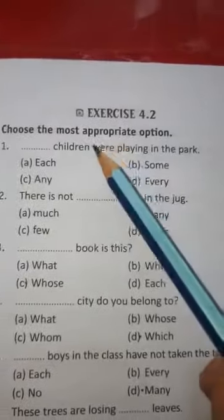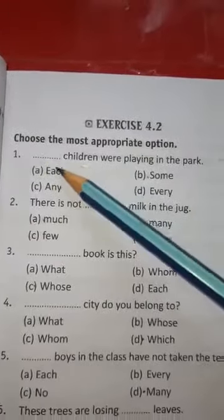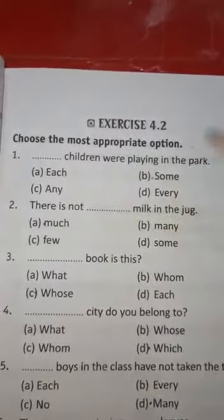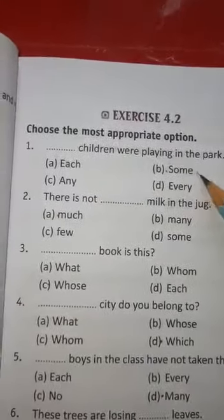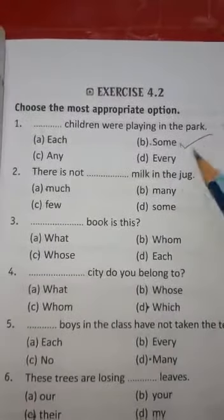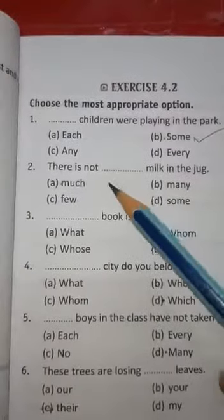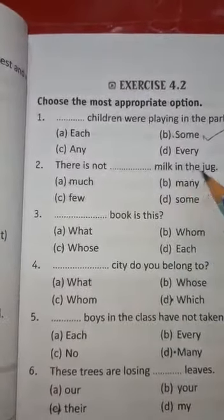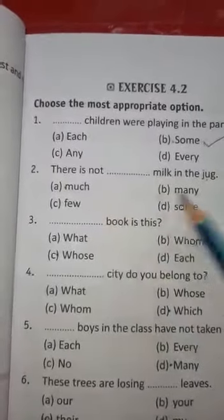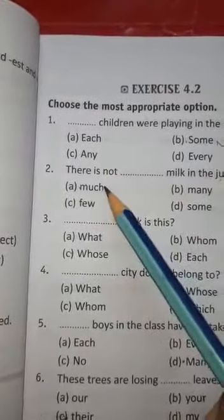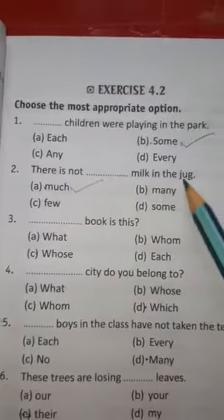Now let's move to exercise number 4.2: choose the most appropriate options. At number one: 'Their children were playing in the park' — from each, any, some, or every, we go with 'some.' At number two: 'There is not ___ milk in the jug' — for uncountable nouns we go with 'much,' so: 'There is not much milk in the jug.'